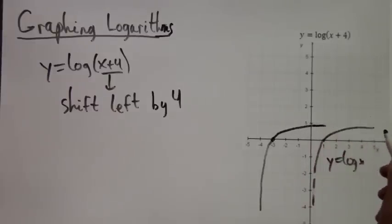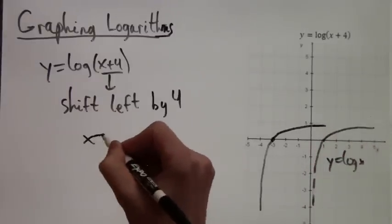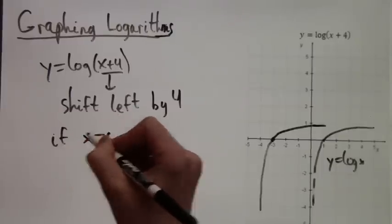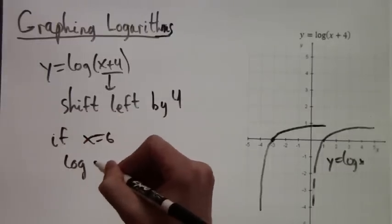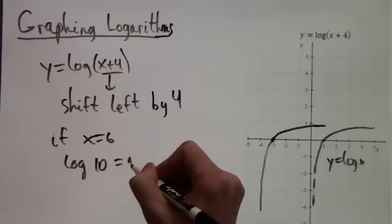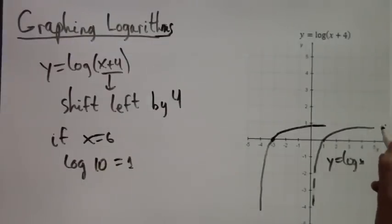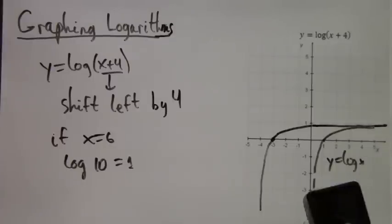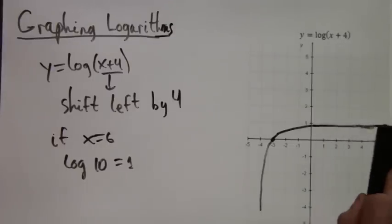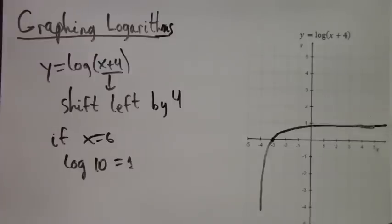There's actually a second point we can draw just to confirm the accuracy of our graph. If x equals 6, then if we have 6 plus 4 we get 10, and log of 10 is 1. So at x equals 6 we should be at 1, and that is about what the graph will look like.